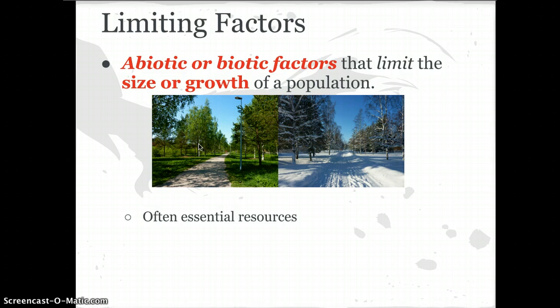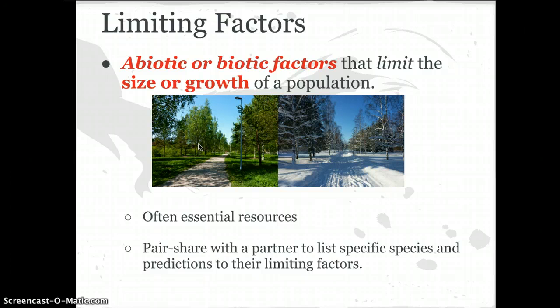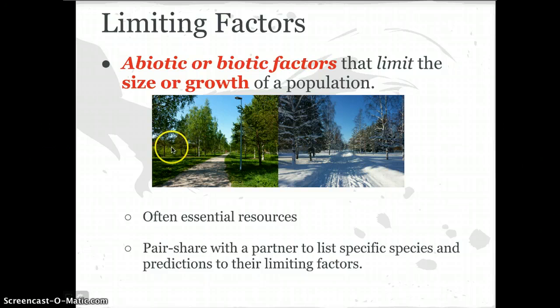Take a second to really think through what limiting factors means. Pair up with a partner and list as many specific species as you can along with predictions about what their limiting factors are. For example, a rabbit species — one limiting factor for that rabbit population could be the availability of grasses to eat. Try to be specific. We'll pause for two minutes.